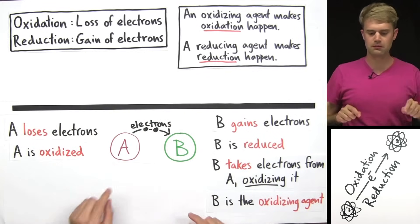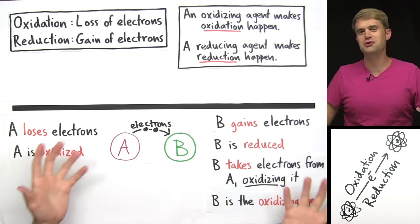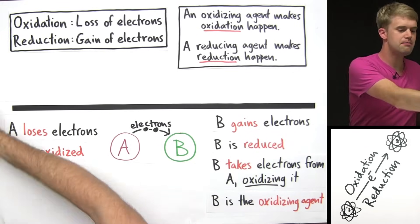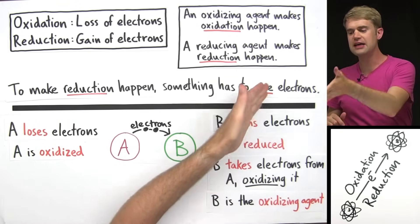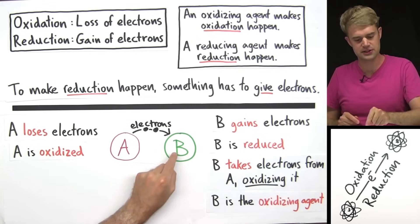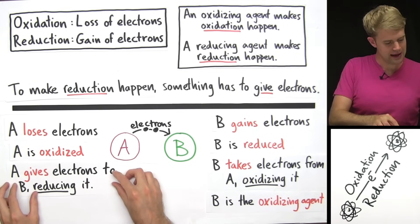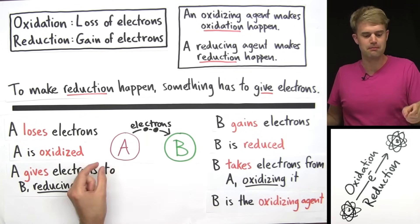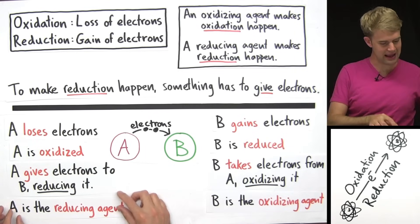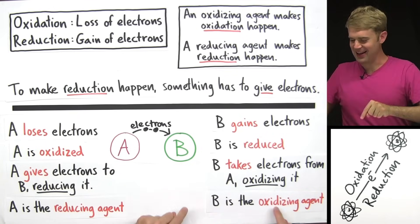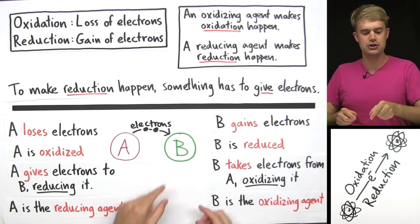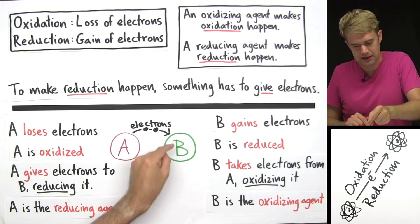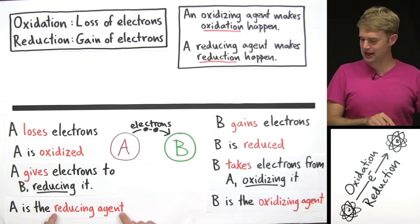Now let's talk about reduction. Here in our diagram, we have B — B is gaining electrons. But you just can't gain electrons out of thin air. If you're going to gain electrons, something else has to give you those electrons. So we can say that to make reduction happen, something has to give electrons. Where are the electrons coming from that B is gaining? They're coming from A. A gives electrons to B, reducing it, allowing it to be reduced. And since A is making this happen by giving the electrons to B, we can say that A is the reducing agent. So B is the oxidizing agent — it's making oxidation happen by taking the electrons from A. A is the reducing agent — it's making reduction happen by giving the electrons to B.